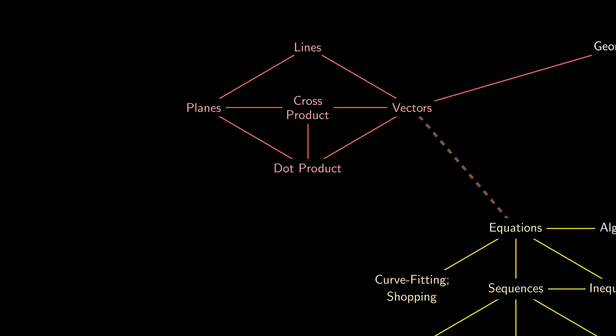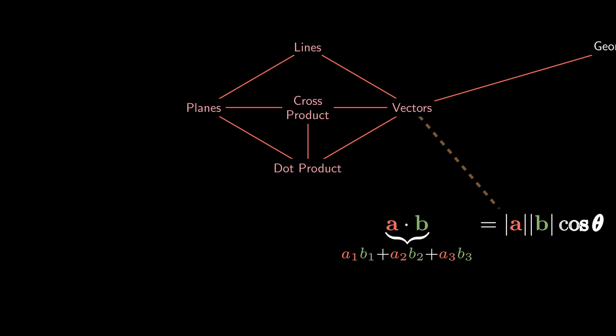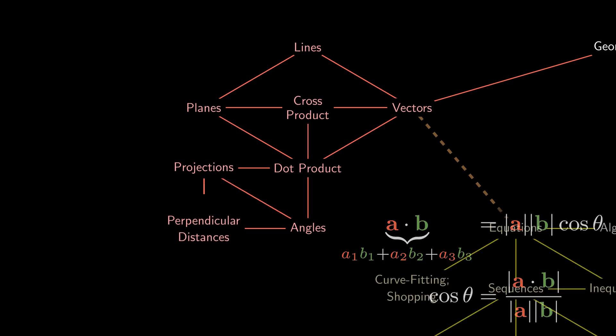Dot product is a really useful idea because it connects the algebraic calculation in terms of a sum product with the geometric interpretation in terms of the angle between the two vectors. By isolating cosine of θ, we can obtain projections and perpendicular distances between various geometric objects.